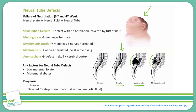How are neural tube defects diagnosed? In women with regular prenatal care, these defects are often picked up during pregnancy via ultrasound images of the growing fetus. Additionally, a maternal serum alpha-fetoprotein level can indicate that a neural tube defect might be present, but alone is not diagnostic.